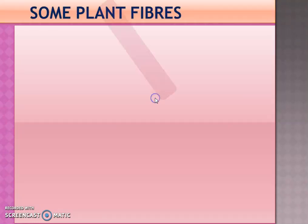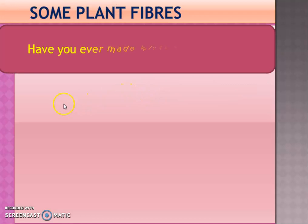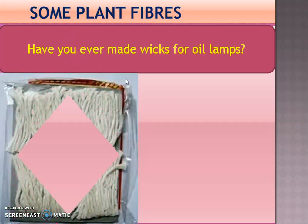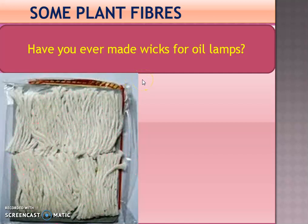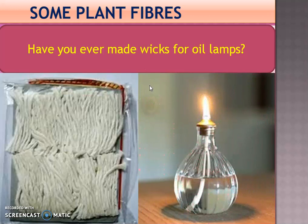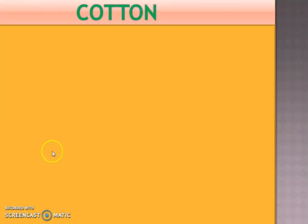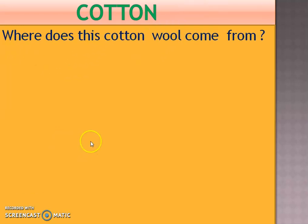Now let's look at some plant fibers. Have you ever made wicks for oil lamps? Cotton wool is used for making these wicks. Cotton wool is also used for filling mattresses or pillows. Take some cotton wool and pull it apart and look at its edges - the small thin strands that you see are made of cotton fibers.